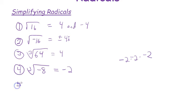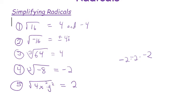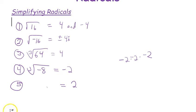Sometimes you have variables in these roots. For example, the square root of 4x²y². Take the square root of 4 normally — just positive 2 — then for the variable exponents, divide those powers by 2 because it's a square root.